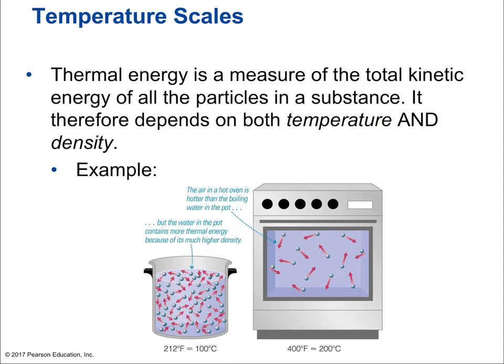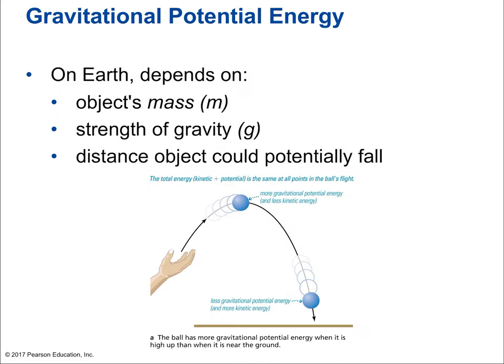Thermal energy is a measure of the total kinetic energy of all the particles in a substance. It therefore depends on both temperature and density. Temperature was a measure of average kinetic energy, while thermal energy is the total — you take temperature and multiply it by density. What about gravitational potential energy? Potential is the ability to change energy to another form. Gravitational potential is at the forefront when you hold an object above the ground: releasing it allows it to fall and gain kinetic energy.